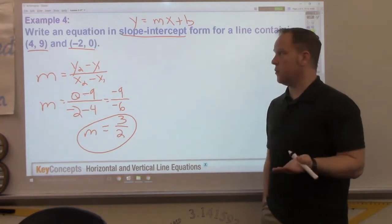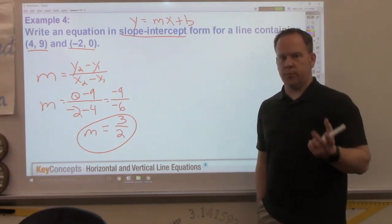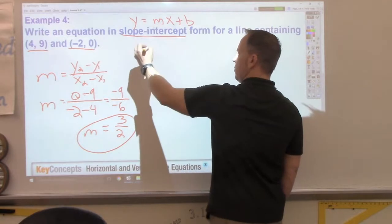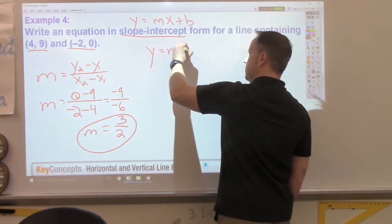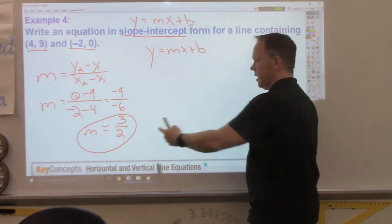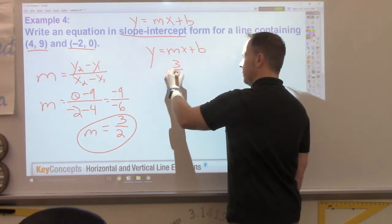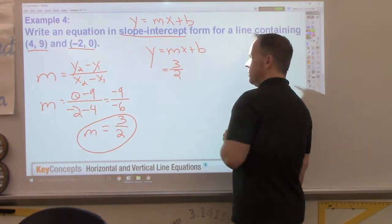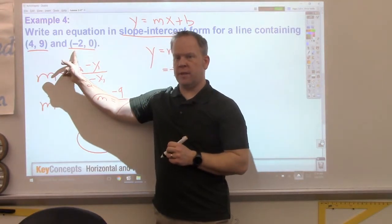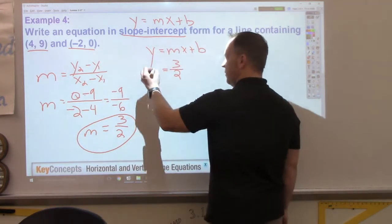Now, we have a couple of different options on how to find the y-intercept. You could use point-slope form and solve for y. Or, I'm going to use this formula. I'm going to use this formula. I know my slope. And, I'm going to use either one of these points to solve for b. It doesn't matter which one you use. It'll still come out the same. I'm going to use 0, negative 2.